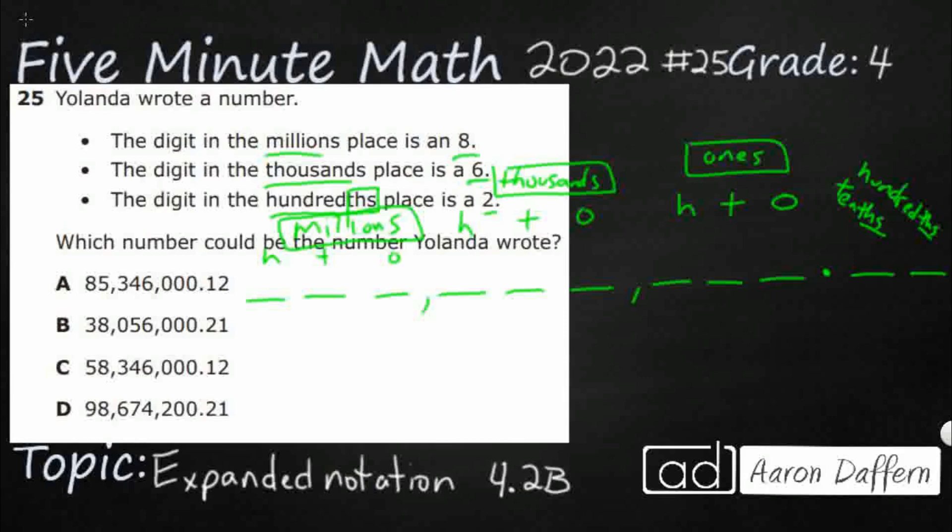Eight in the millions—well, that's going to be one million, so I'm going to put an 8 right there. I've got 6 in the thousands, that's going to be a 6 right there in the thousands place. And then 2 in the hundredths. All right, so that's it. My number needs to match up with that.